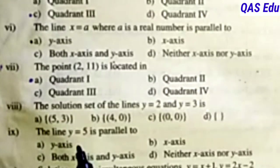Question 9: y = 5 is parallel to x-axis. The correct option is x-axis.